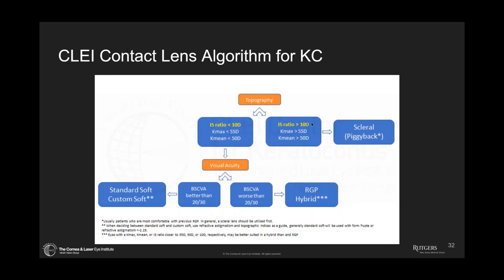We put it into an algorithm. We looked at asymmetry from the top to bottom of the cornea as the most important factor. If you had greater than 10 diopters in IS ratio and a K max of over 55 diopters, we went into a scleral or piggyback lens. The piggyback lens we use for individuals who couldn't be successful in the scleral lens due to handling difficulty or other issues. If they were less than those cutoffs, we went to manifest refraction visual acuity: if better than 20/30, we'd be very successful in a standard soft or custom soft lens; if worse than 20/30, then we had success in RGP or hybrids. We've been doing a prospective study on this and the algorithm works very well.